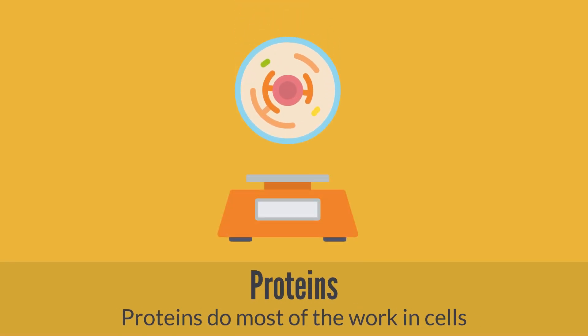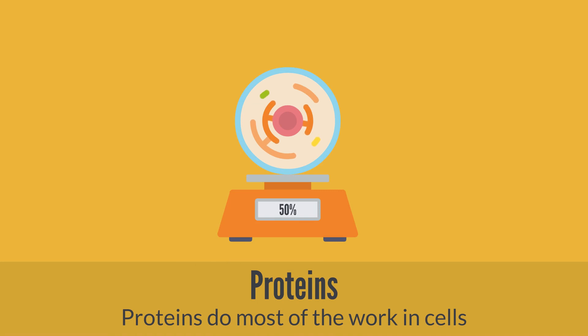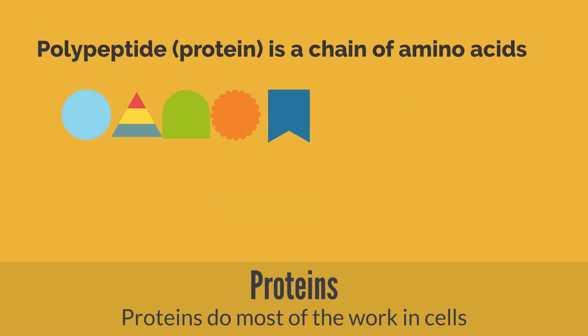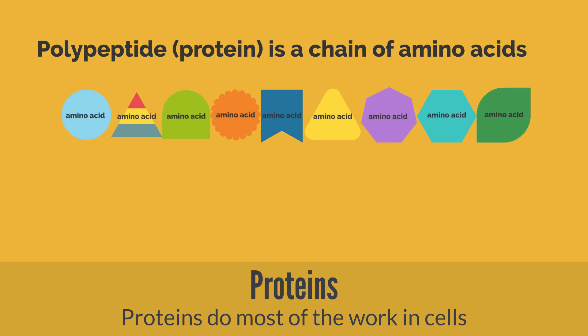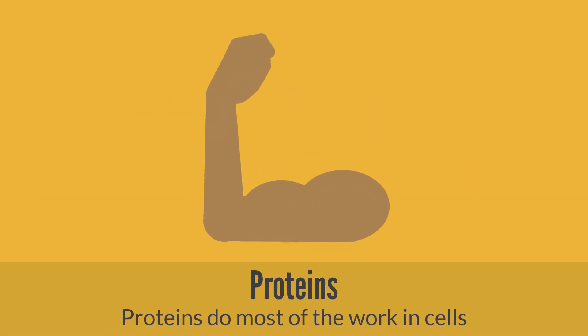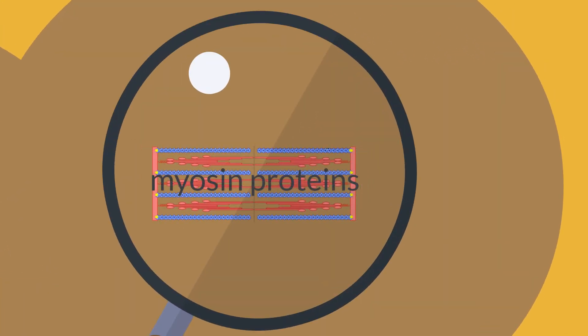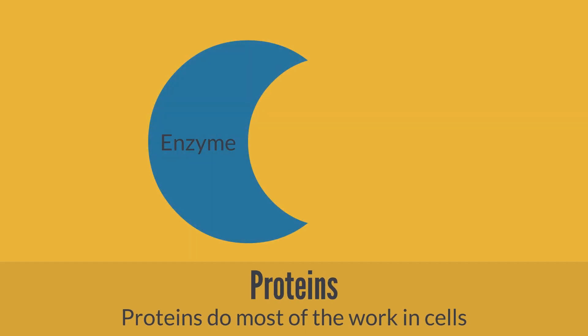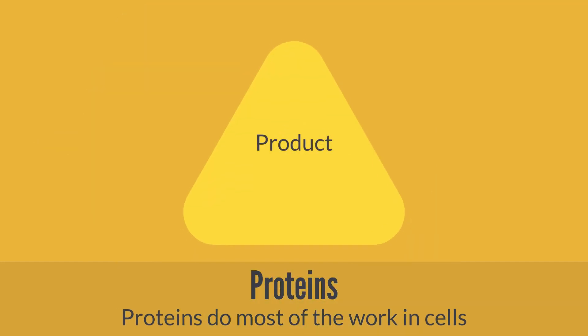Proteins make up around 50% of a living cell's dry weight. Proteins are polymers of amino acids, arranged in the form of polypeptide chains. Proteins play both structural and dynamic roles in living cells. For example, myosin is the protein that allows movement by muscle contraction, and enzymes are proteins that regulate chemical reactions in cells.